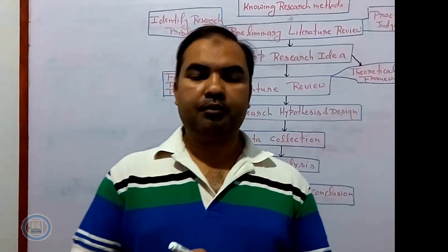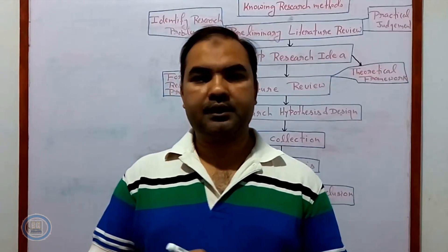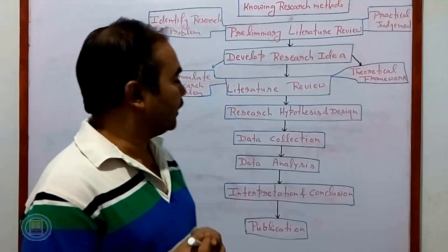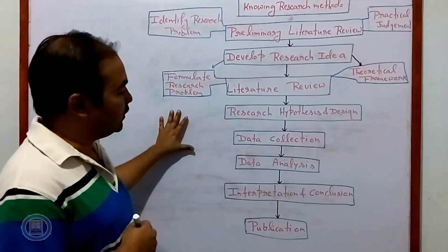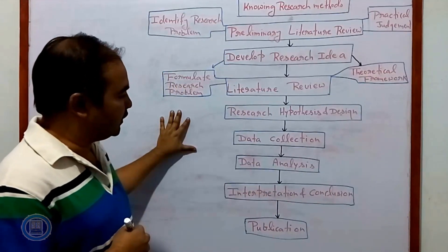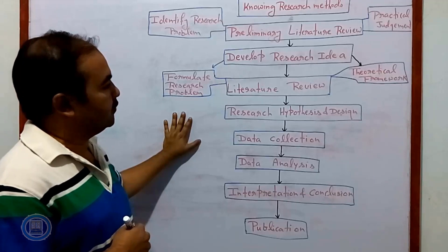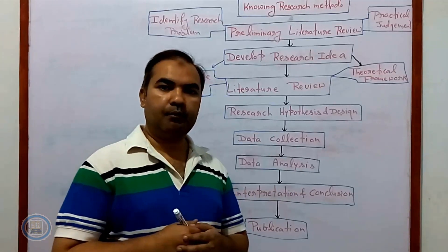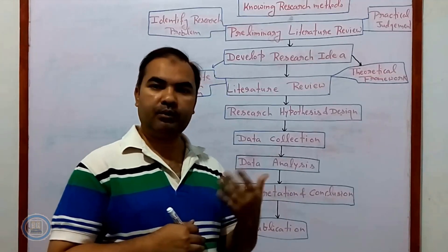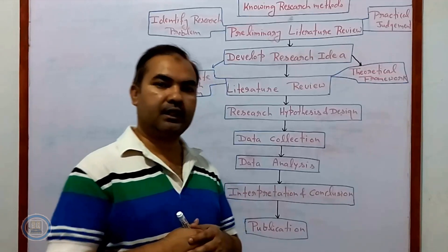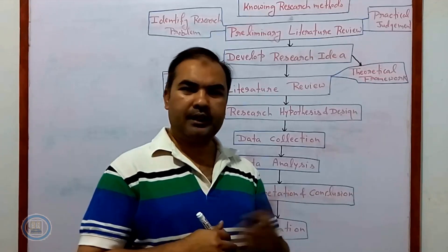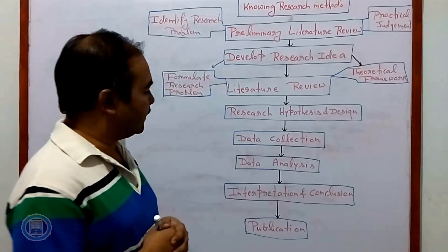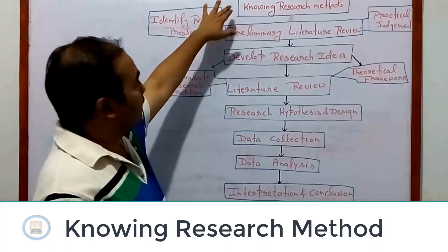In this session, we are going to discuss about the research process — that is, how to plan the research and how to conduct the research. This is a schematic representation of the research. In this diagram, we are having the following processes. These processes may differ depending upon your requirement and the field in which you are conducting the research, but more or less they are near about the same.